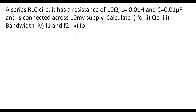Consider one example on a series RLC circuit. A series RLC circuit has resistance of 10 ohm, L is equal to 0.01 Henry, and C is equal to 0.01 microfarad, and is connected across a 10 millivolt supply. Calculate resonant frequency F0, quality factor Q0, bandwidth, lower cutoff frequency F1, upper cutoff frequency F2, and maximum current at resonance, that is I0.